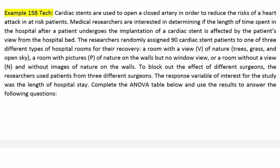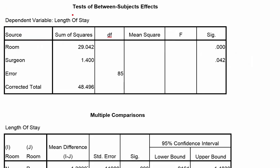Let's take a look at the ANOVA table. The dependent variable is the length of stay in the hospital. They give us the sum of squares for both the room variable and the surgeon variable, but we're missing the error sum of squares. We do have the total sum of squares.